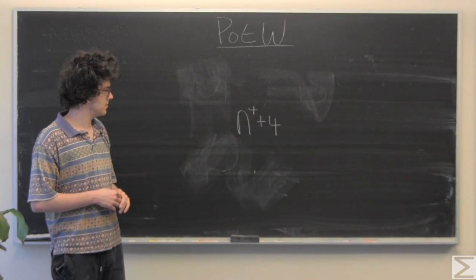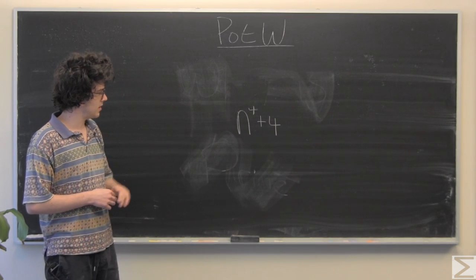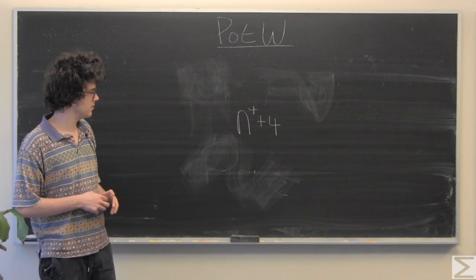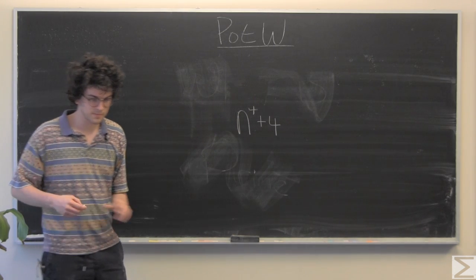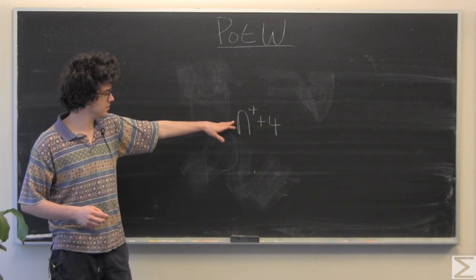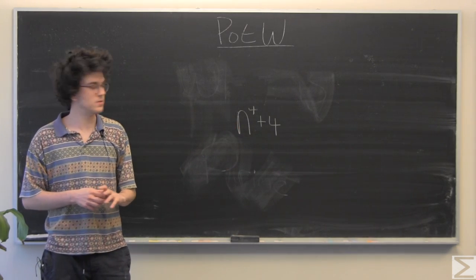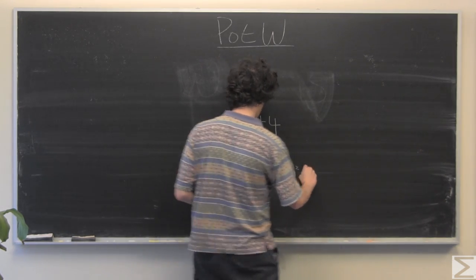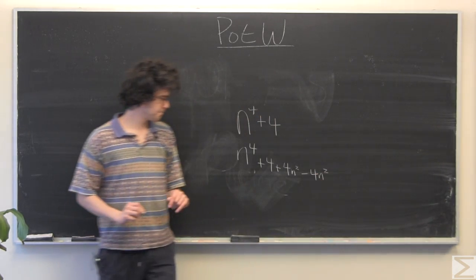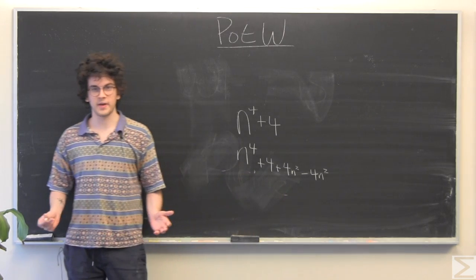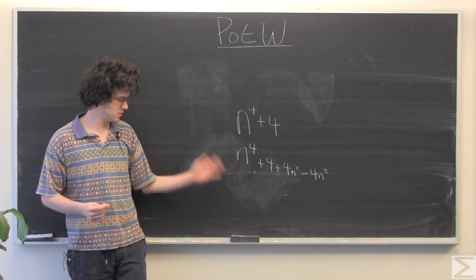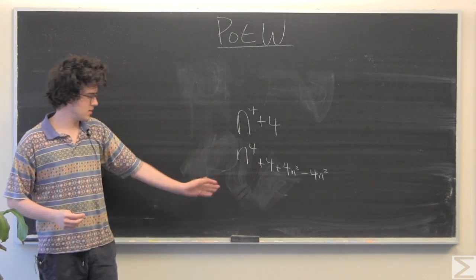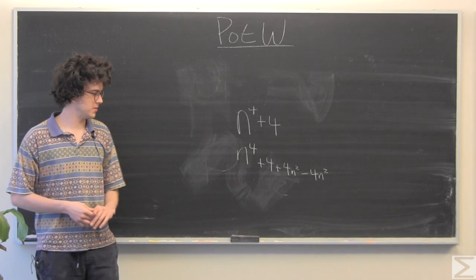And how we're going to do that is introduce a four n squared that's going to factor to n squared plus two. And so I've actually added zero to this, which doesn't change anything, but now we've introduced something we can factor.